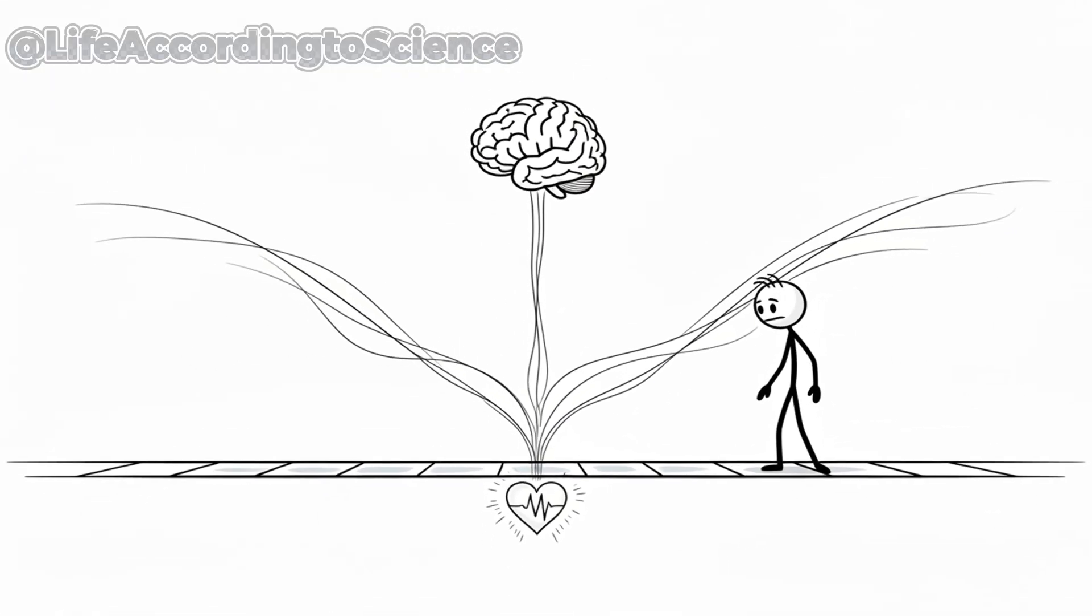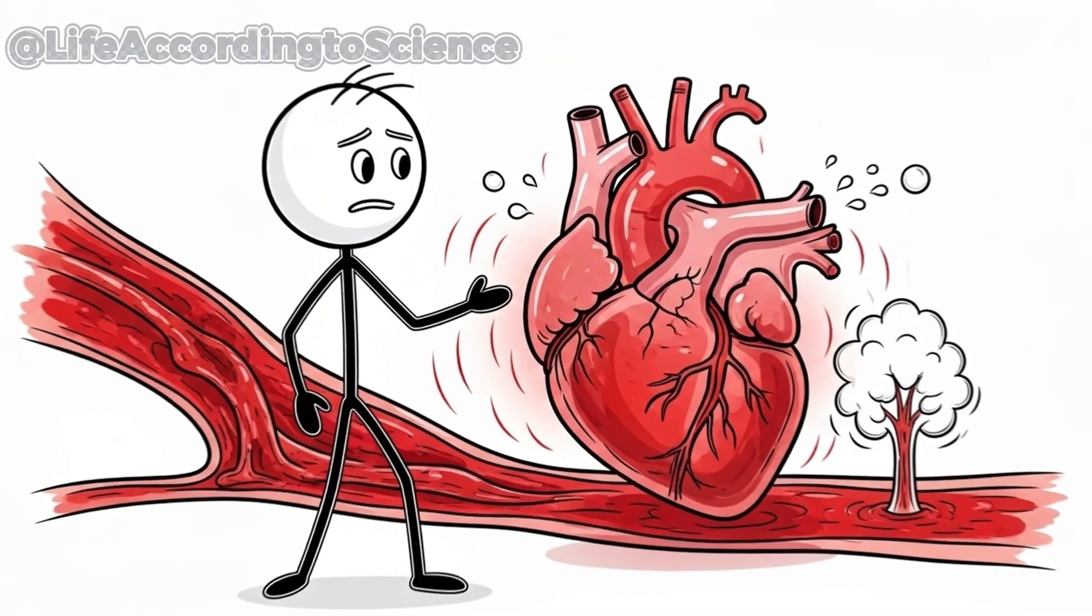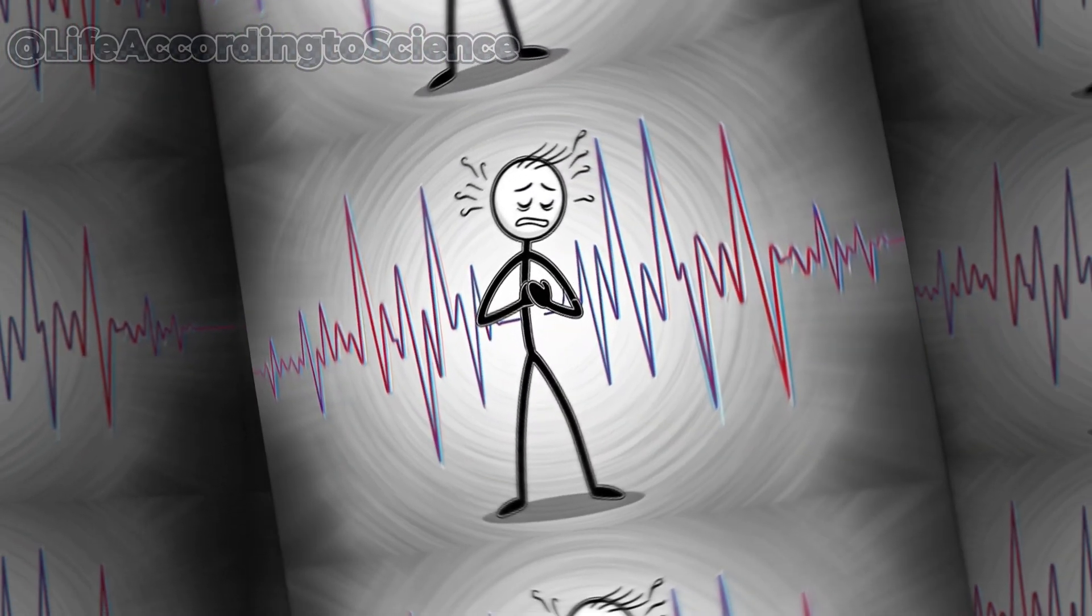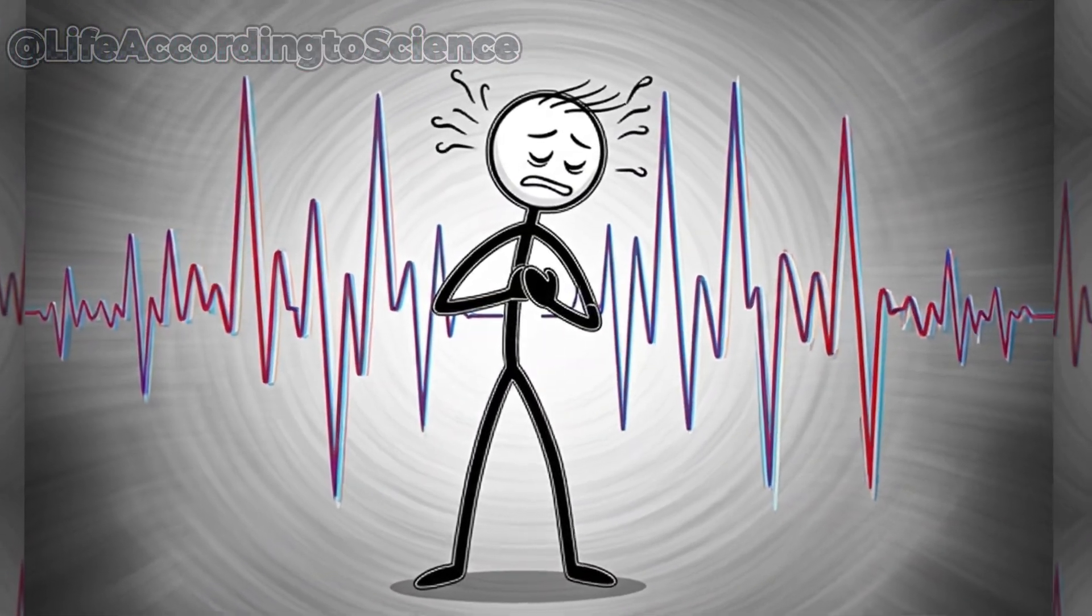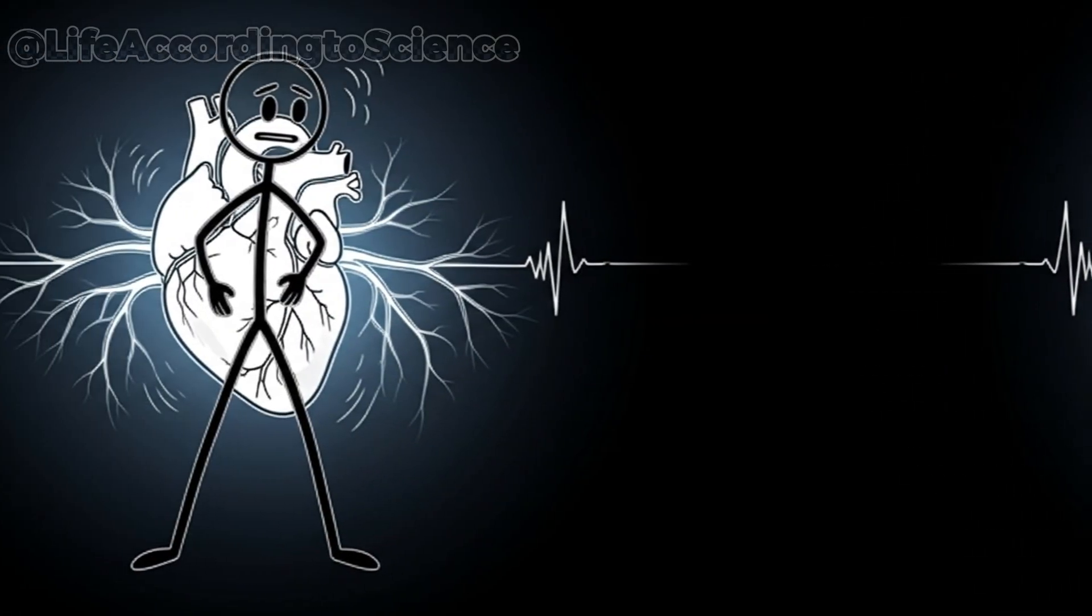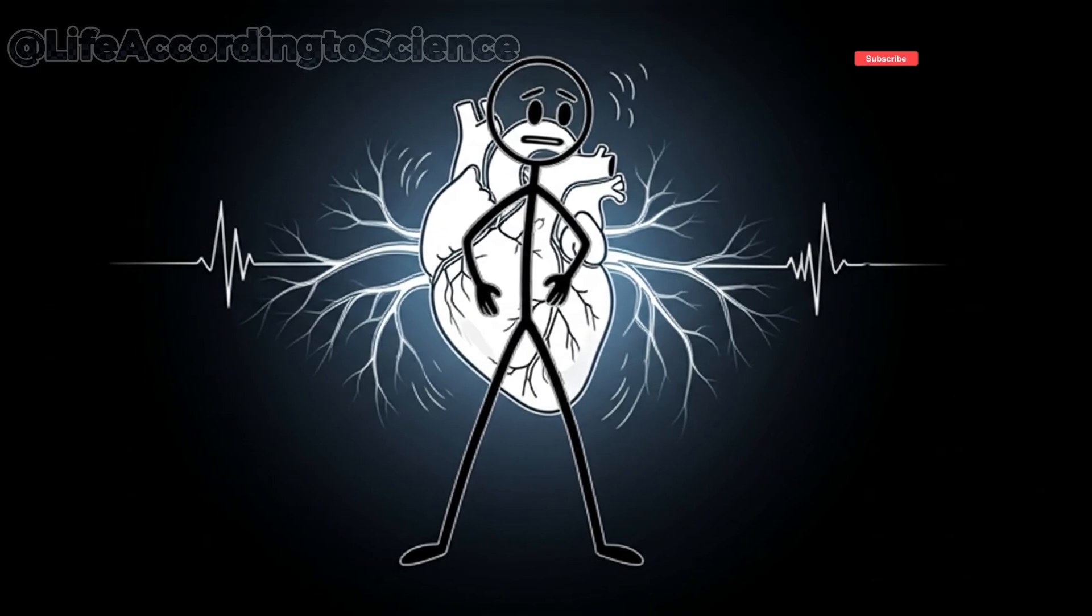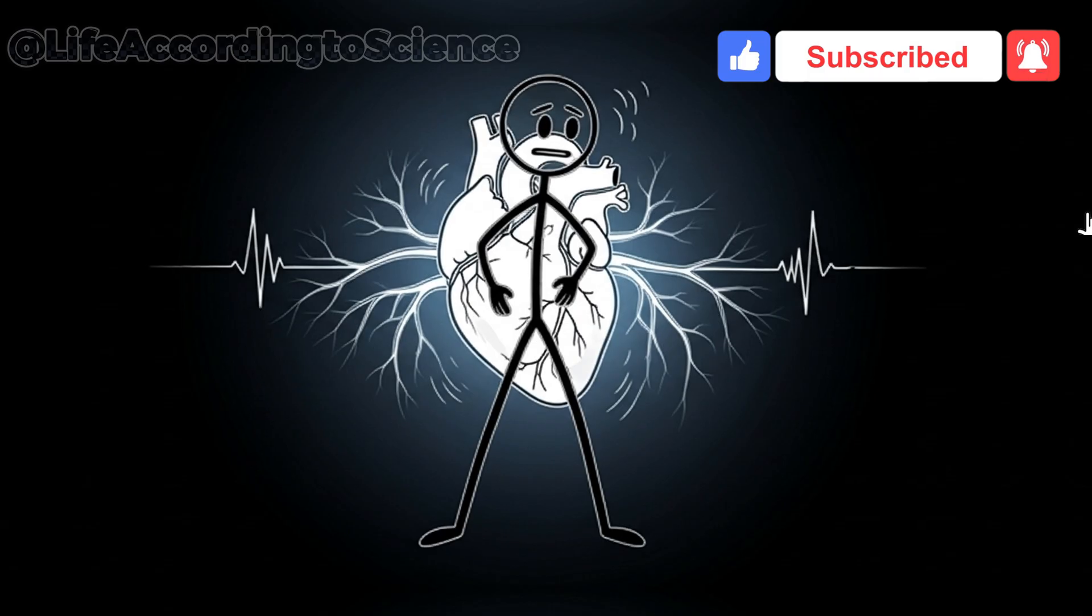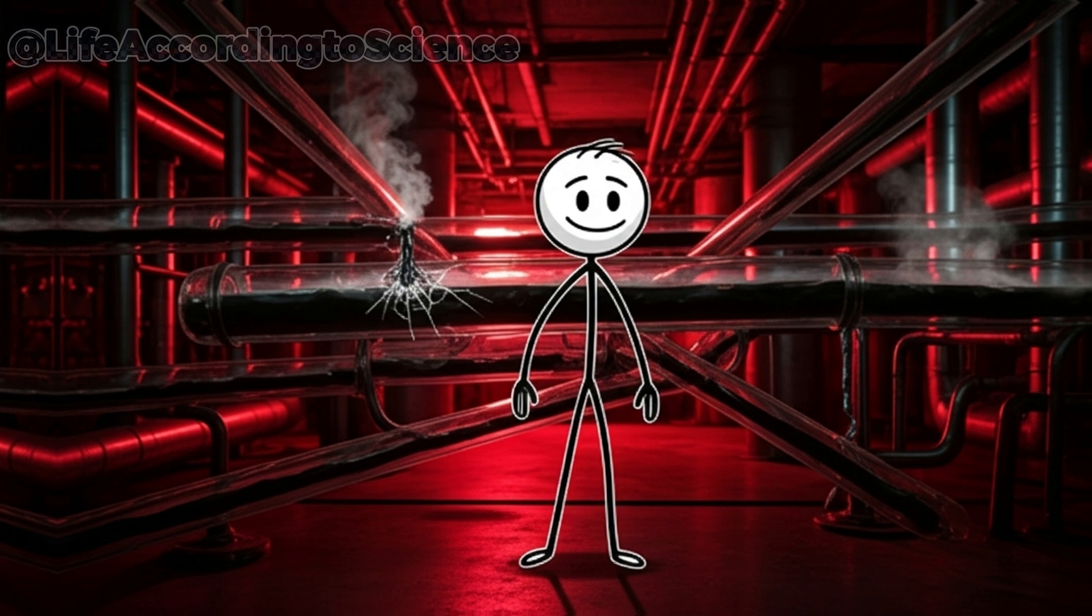On the fourth day, your cardiovascular system takes the hit. With thicker blood and lower volume, your heart must pump harder to deliver oxygen. The result? A rapid, pounding heartbeat, even while resting. Blood pressure swings dangerously, and dizziness becomes constant. This overwork strains your heart muscle, especially if you already have cardiovascular issues. The lack of hydration also means less blood returns to the heart, making each beat less efficient.